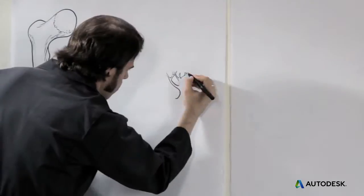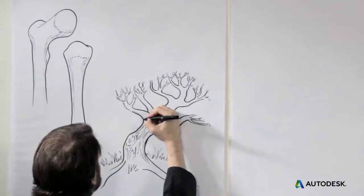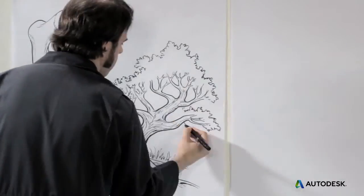Nature avoids corners too. Look at bones or trees. They usually have gradual corners and nice radius curves. Swoopy curves to make your products look more like nature. That's nice aesthetics.